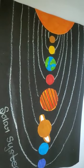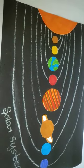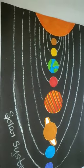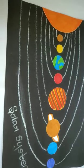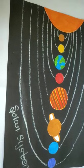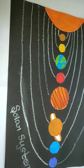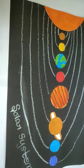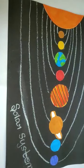Earth is the third planet from the sun. You probably know a lot about the planet Earth because it is the planet where we live. The Earth is also the first planet traveling around the sun with one moon.